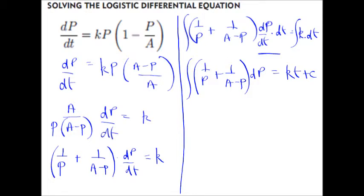Now, integrating one on P with respect to P, I end up with ln of mod P. And the next fraction would be ln of mod A take P, divided by the negative one that comes from the derivative of negative P. Now, we've got the subtraction of two logarithms. We can express that as a single logarithm. So we divide P and A take P in the modulus.